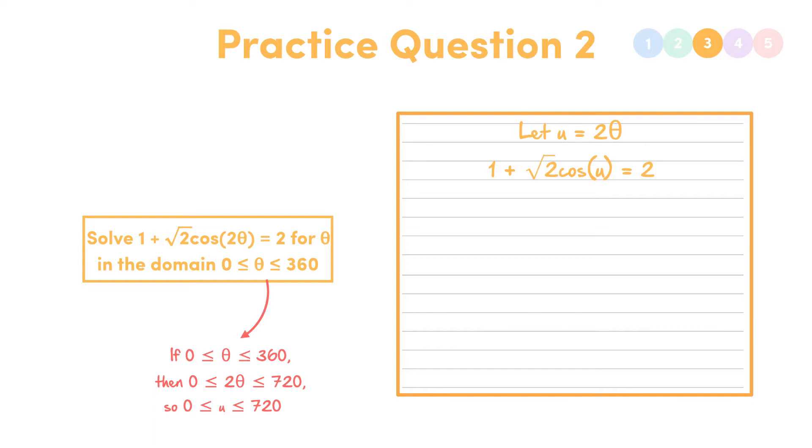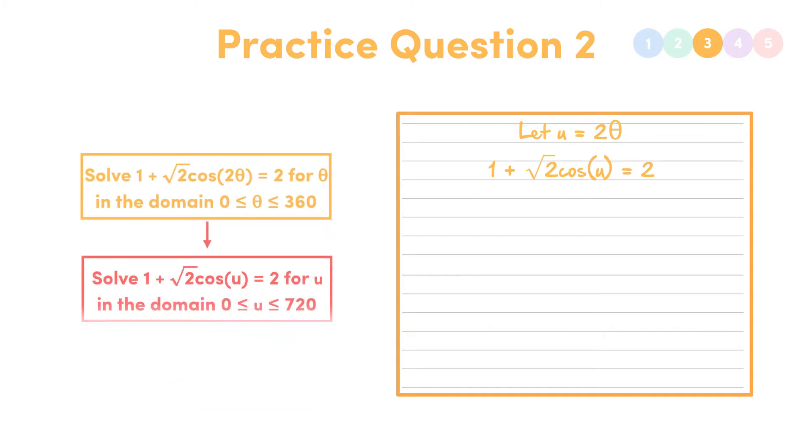So when we sub u into our question, we essentially get a new question, which is, Solve 1 plus root 2 cos u equals 2, for u in the domain 0 less than u less than 720.